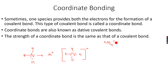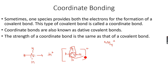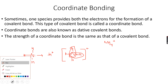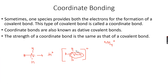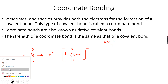This is called coordinate bonding — nitrogen gave both the electrons for the formation of this covalent bond between nitrogen and the H+ ion. Once this bonding happens, you cannot distinguish the strength between this N-H bond and the other N-H bonds because the strength is the same. However, the way to represent coordinate bonds requires a specific notation — the correct way to represent them is different.